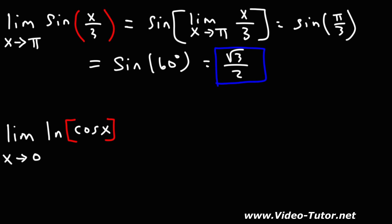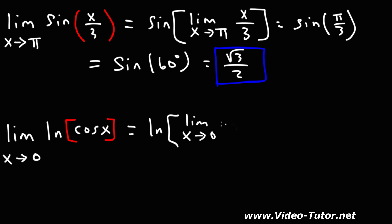For the next example, we have another composite function. What we can do is write it like this: we have the natural log of the limit as x approaches 0 of cosine of x.